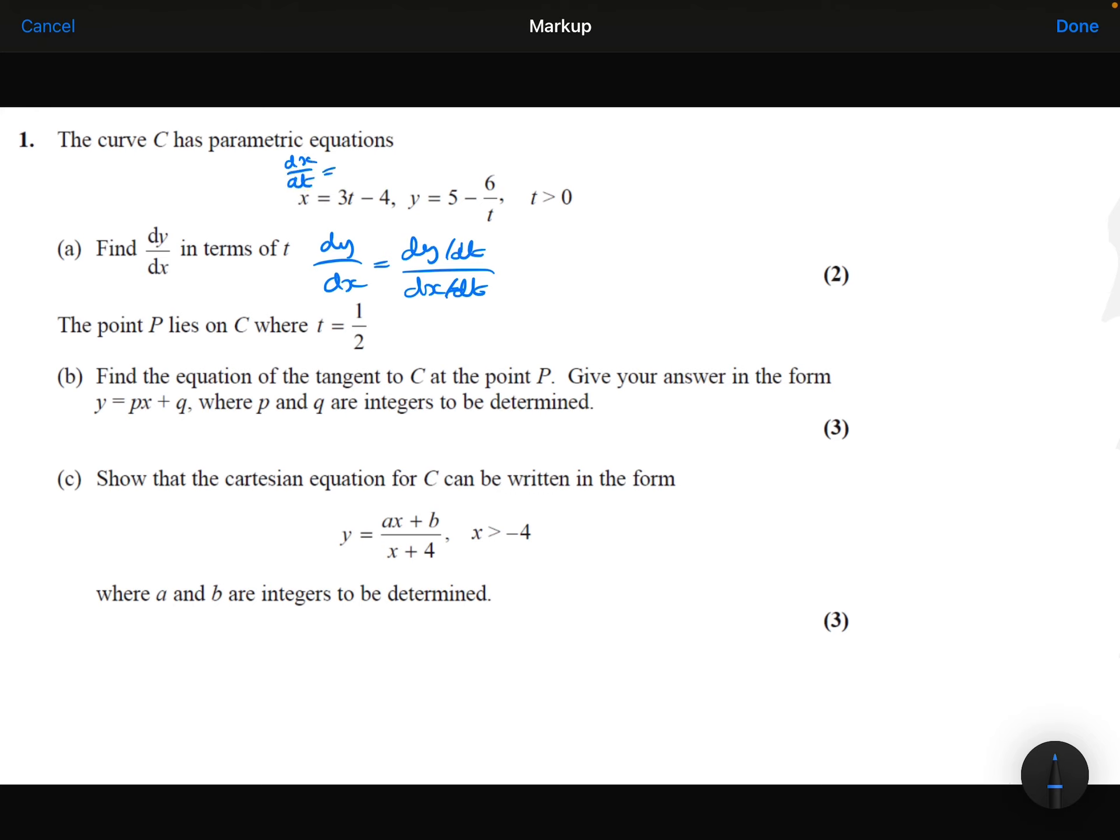3t minus 4 differentiates to be 3. To differentiate the y function, I'm just going to rewrite that as 5 minus 6t to the minus 1.